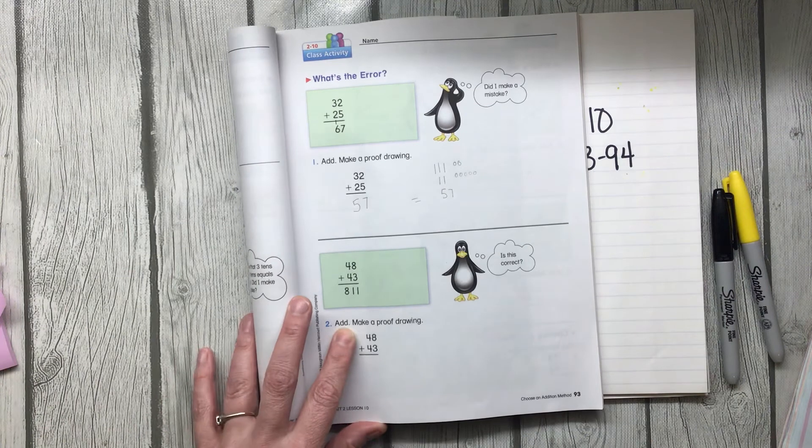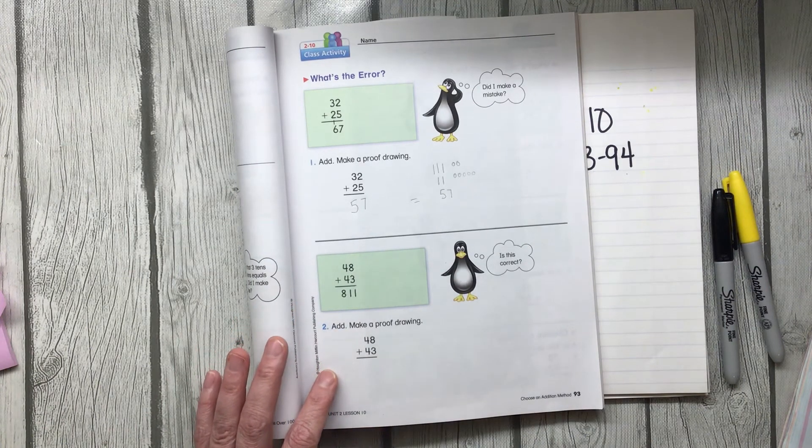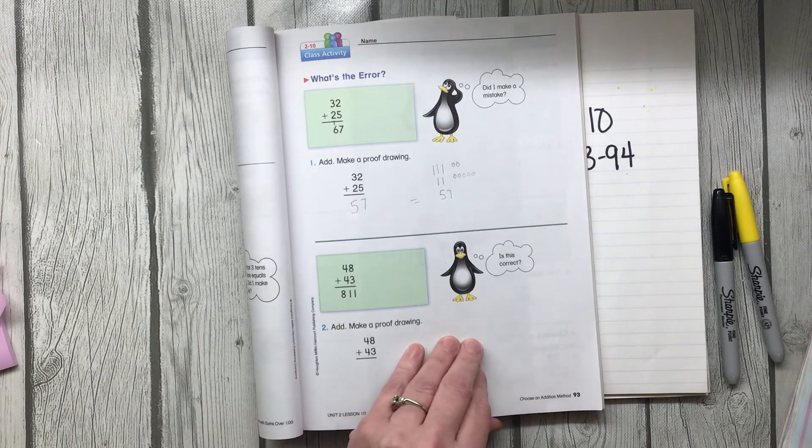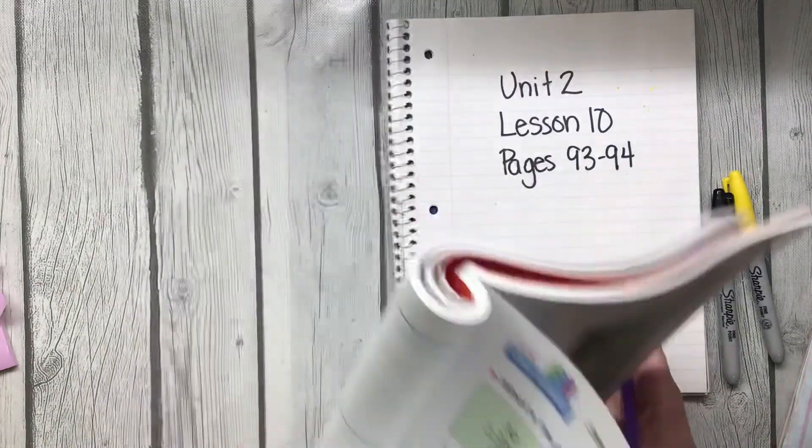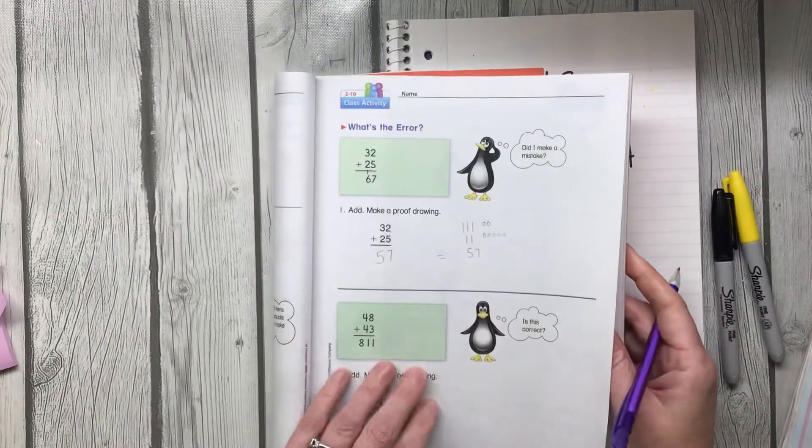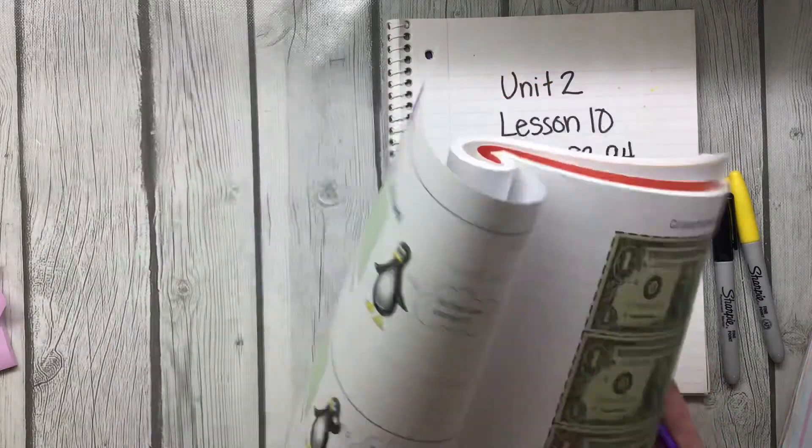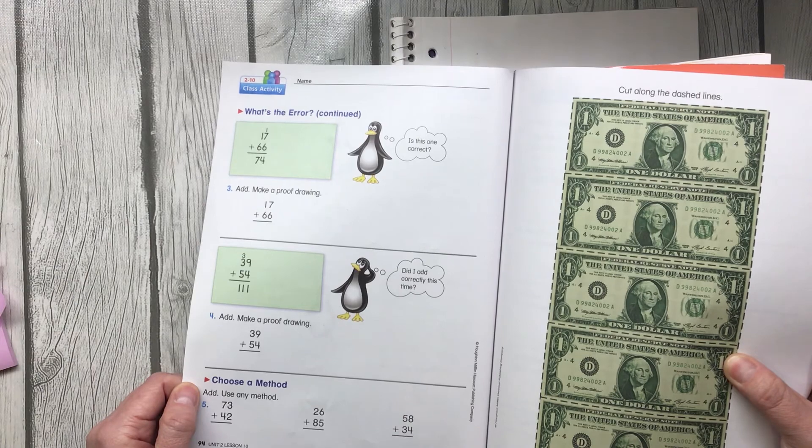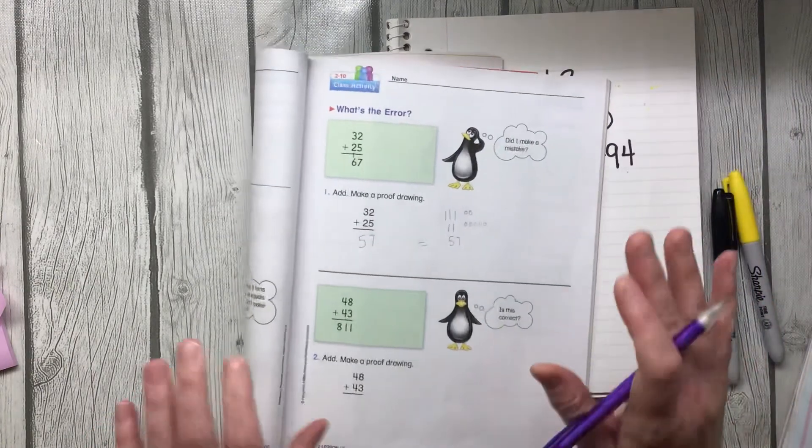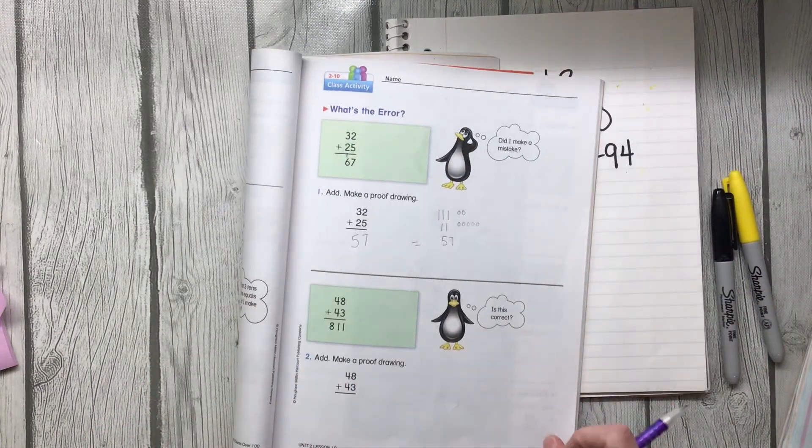So go ahead and solve number 2 right now and show it to me and I will know you're finished and ready to go into a breakout room. And we're going to do all these pages. And I want a picture of this page. Page 94 is where I want the picture today. All right? Let's get to work, friends. Let's solve this Puzzled Penguin's problems.